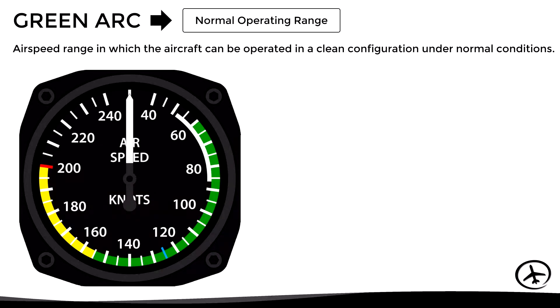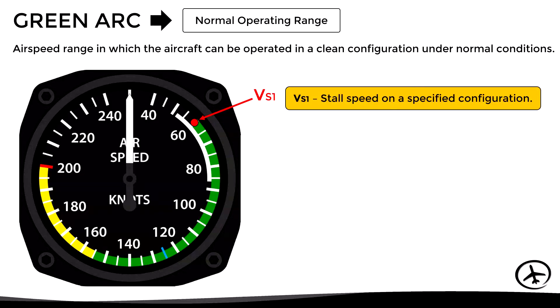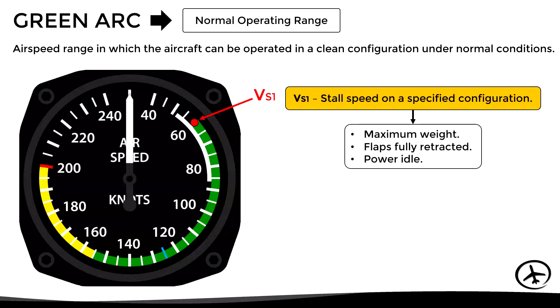The green arc represents the normal operating range — the speed range in which the aircraft can be operated in clean configuration under normal conditions. Clean configuration means that the landing gear and flaps are fully retracted. The speed at which the green arc starts is VS1, the stall speed in a specific configuration determined by the manufacturer, normally corresponding to maximum certified weight, flaps fully retracted, and power idle.